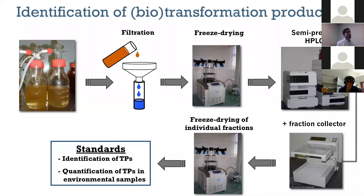To investigate this, we used lab batch reactors with diluted activated sludge, spiked our compounds at high concentrations, then incubated the samples. After incubation, we filtered the sample to obtain the water phase, which was freeze-dried to concentrate down to a few milliliters. These were then injected into a semi-preparative HPLC-UV system coupled to a fraction collector, allowing us to isolate all the different transformation products being formed. After fraction collection, we freeze-dried the individual fractions to obtain purified transformation products — standards used both for identification and for quantification of these transformation products in the environment, since in most cases no analytical standards are commercially available.